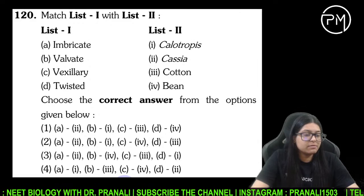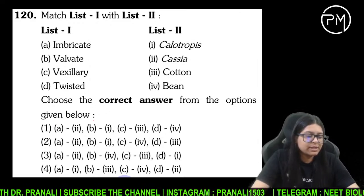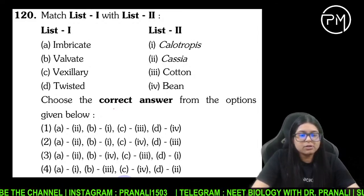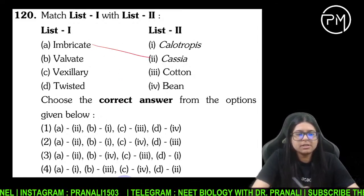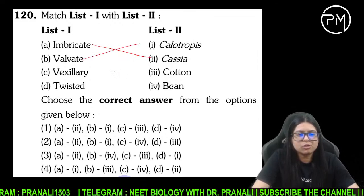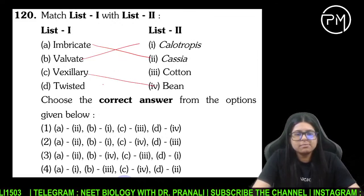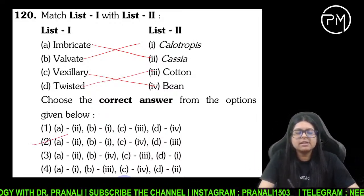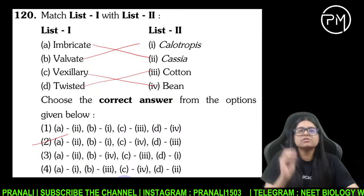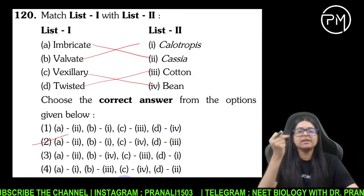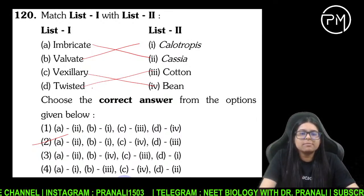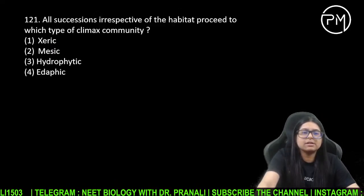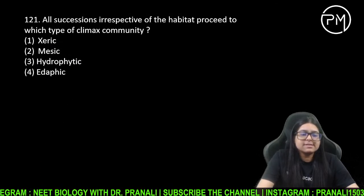Question number 120: imbricate kismein dekhne ko milega? Cassia mein dekhne ko milega. Valvate — Calotropis mein. Vexillary — bean mein. Twisted — cotton mein. Yaad karaya tha na — lady finger China ki lady twisted hai toh cotton wali twisted mein aa gayi.